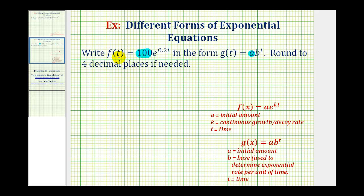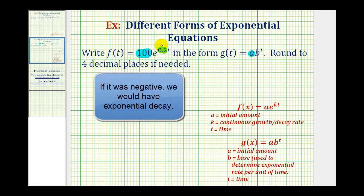But for an exponential function with base e, the coefficient of the exponent, or in this case 0.2, gives us the continuous exponential growth or decay rate. And because this is positive, we know this function models a 20% continuous growth rate.